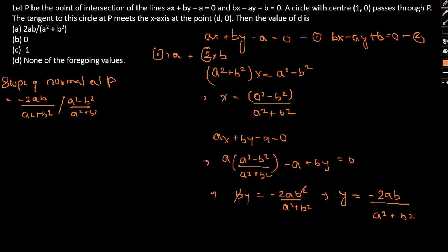If we further simplify the same, it can simply be given as A by B. So therefore, the slope of the tangent will be minus B by A because the product of the same is minus 1.